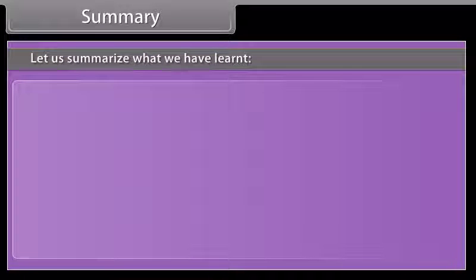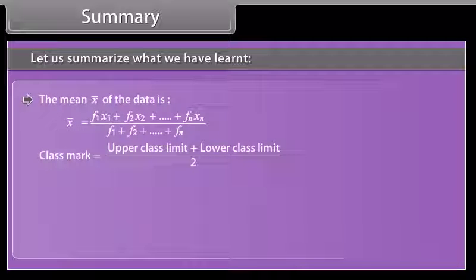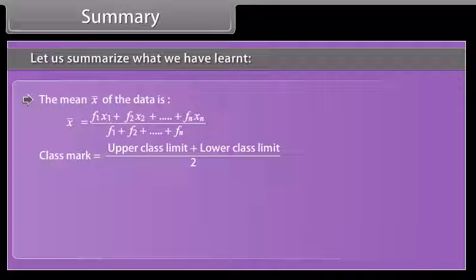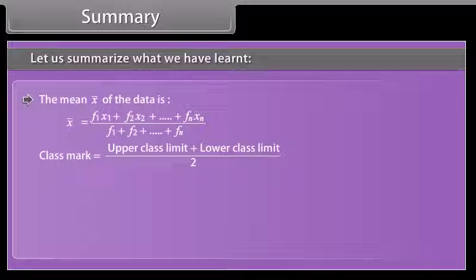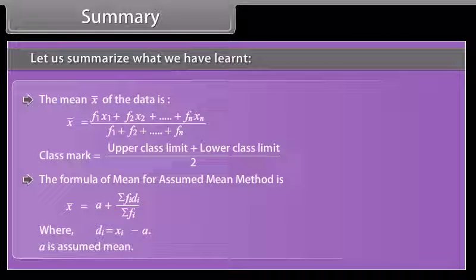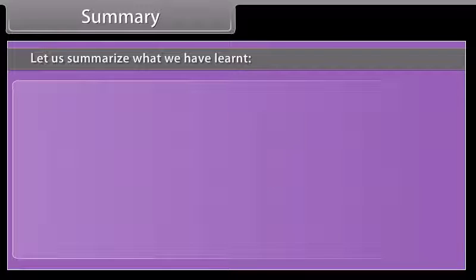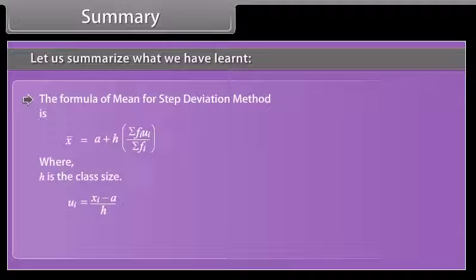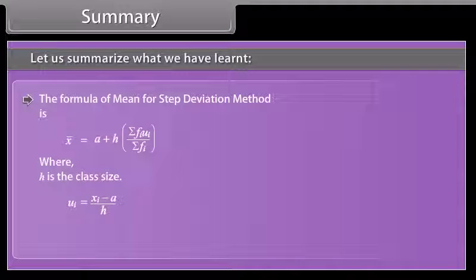Summary: The mean X-bar equals F1·X1 plus F2·X2 plus so on plus Fn·Xn, divided by F1 plus F2 plus so on plus Fn. Class mark equals upper class limit plus lower class limit divided by 2. The formula of mean for assumed mean method is: assumed mean plus summation of Fi·Di divided by summation of Fi, where Di equals Xi minus A, and A is the assumed mean. The formula of mean for step deviation method is: assumed mean plus H multiplied by summation of Fi·Ui divided by summation of Fi, where H is the class size and Ui equals Xi minus A divided by H.